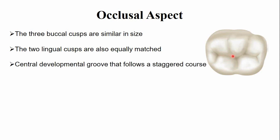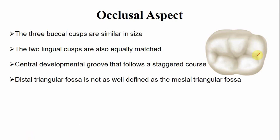The central developmental groove follows a staggered or zigzag pattern from the mesial triangular fossa to the distal triangular fossa. The grooves include the central developmental groove, the mesio-buccal developmental groove, the disto-buccal developmental groove, the lingual developmental groove, and some accessory or supplementary grooves. There are two triangular fossae: the distal triangular fossa and the mesial triangular fossa. The distal triangular fossa is not as well-defined as the mesial triangular fossa, which is quite well-developed.